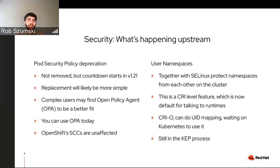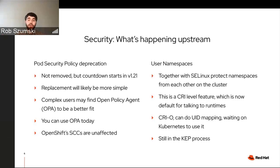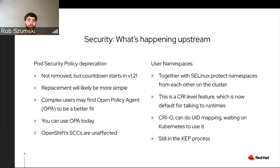The last big security change is user namespaces, a kernel-level construct that's made its way into Linux. Together with SELinux, it helps protect your namespaces from each other on the cluster. In the CRI — the container runtime interface for Kube — this is now there. With CRI-O, what we use in OpenShift, we can do user ID mapping in and out of the container. We're waiting on Kubernetes to roll that out, and the KEP in upstream parlance is still moving forward with some of our engineers pushing it.